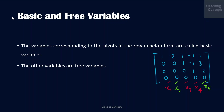The variables corresponding to the pivots in a row echelon form are called the basic variables. In our example, these are x1, x3, and x4. All the other variables are the free variables — here they are x2 and x5.